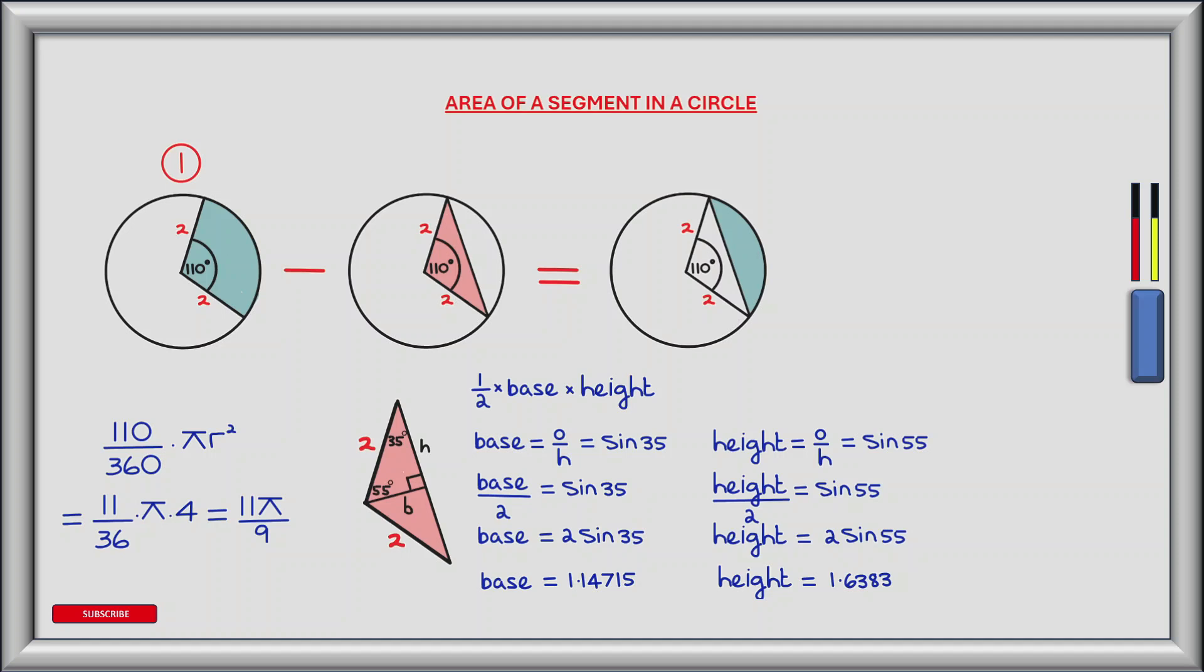Now to find the height, if we use the angle of 55 degrees, we can see the height represents the side opposite the angle of 55 degrees. So using SOHCAHTOA, the opposite side over the hypotenuse side is equal to the sine of 55 degrees. So the opposite side is the height. The hypotenuse has a value of 2, and that all equals the sine of 55 degrees. So the height is equal to 2 times the sine of 55 degrees. So the height is equal to 1.6383.